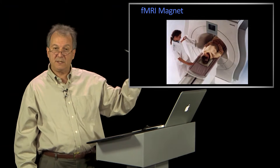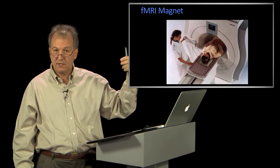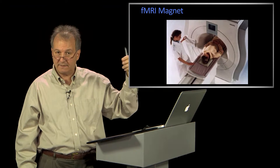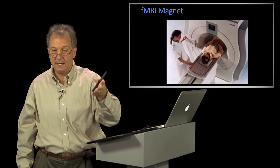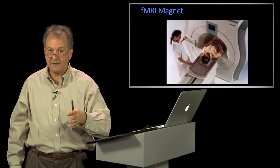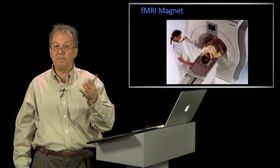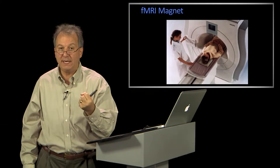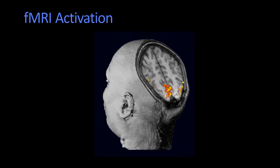Just like we did before with that experiment with the monkeys, where you injected that radioactive isotope connected to oxygen — now what we can do is have you use dye contrast, go into an fMRI, have you look at things, and see what parts of your brain are lighting up. Here's an example, notionally, of an fMRI activation.